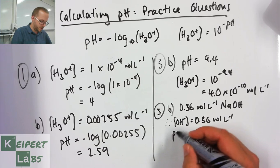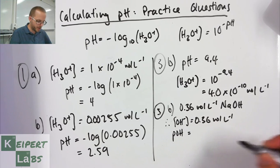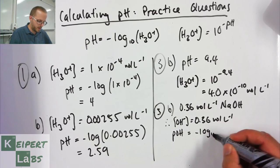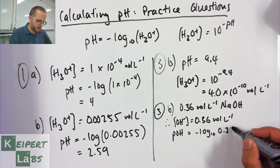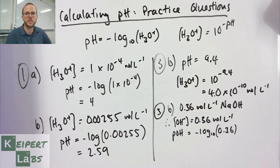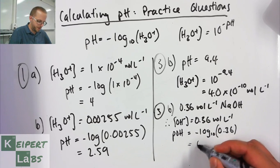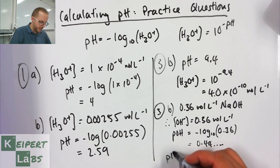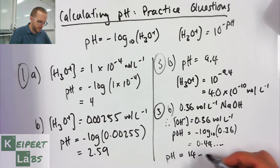And so then I can do a calculation of my pOH. So minus log base 10 of 0.36. And when I calculate this I end up with a value of 0.44 with some additional decimal places.